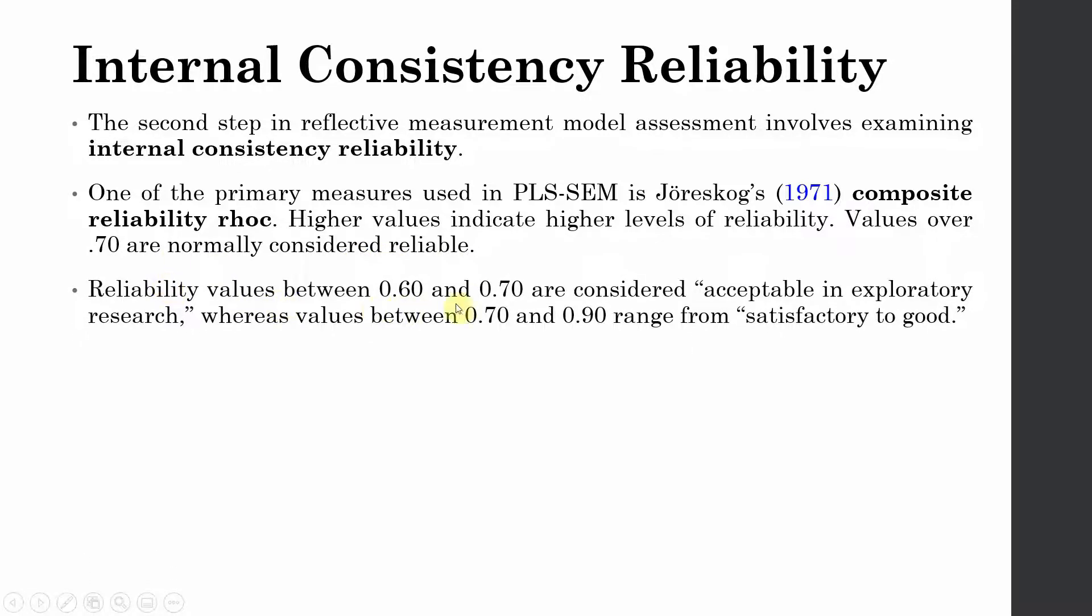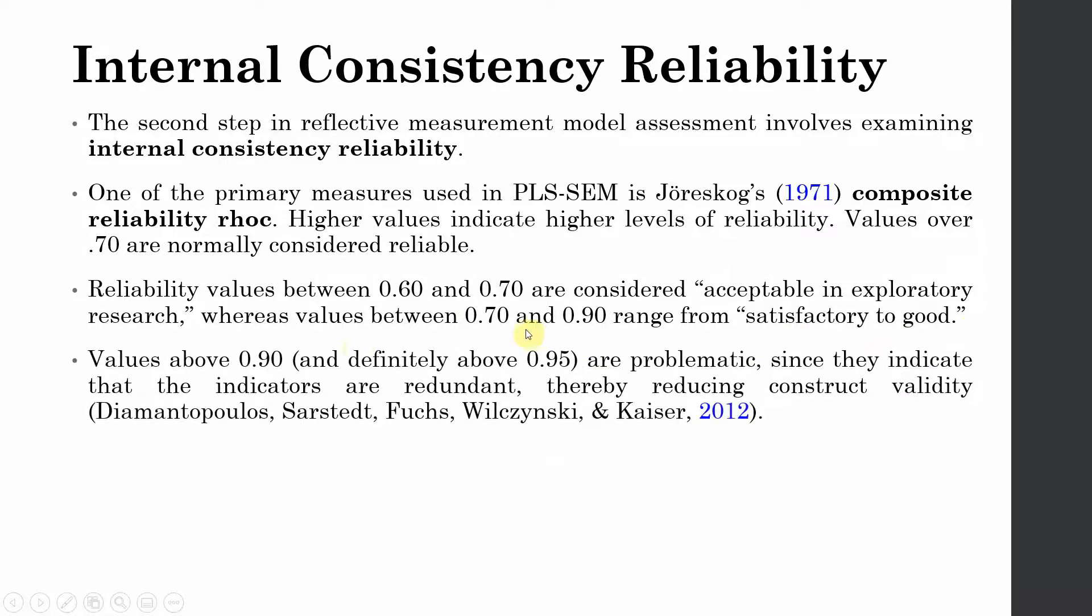Reliability between 0.60 and 0.70 is considered acceptable in exploratory research whereas values between 0.70 and 0.90 range from satisfactory to good. Now values above 0.90 and definitely above 0.95 are problematic since they indicate that the indicators are redundant, thereby reducing construct validity. So if your values for construct reliability are well over 0.95 then these items within your construct are actually redundant.